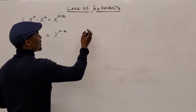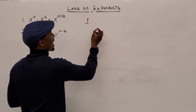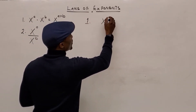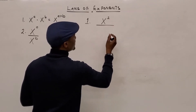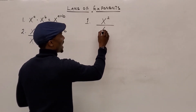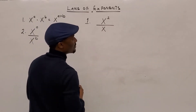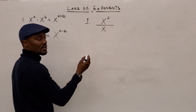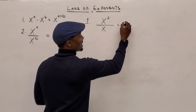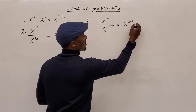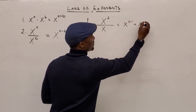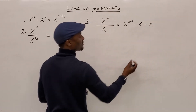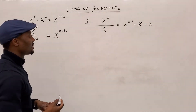Let's say you have x to the power of 2 divided by x. When x is standing alone, it means there's a 1 as its exponent. So this is the same thing as x to the power of 2 minus 1, which is x to the power of 1 — you don't need to write the 1 — which is just x.